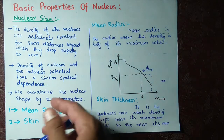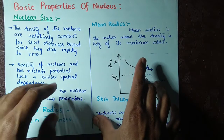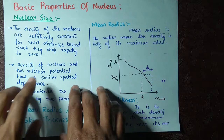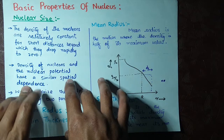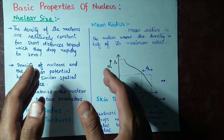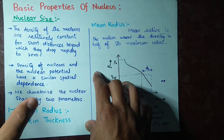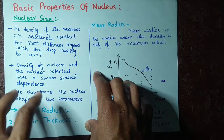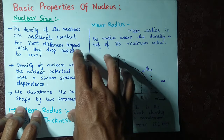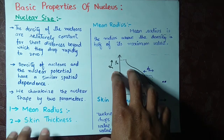The density of the nucleons and the nuclear potential have similar spatial dependence — meaning they depend in a similar way on the x, y, z space coordinates. To characterize the nuclear shape, we have two main parameters: the first one is called mean radius, and the other one is called skin thickness.